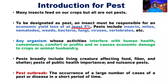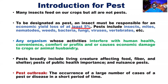In a broad definition, some scientists define pests as living creatures affecting food, fiber, shelter, and public health importance. Pests of public health importance are disease-causing or disease-transmitting pests, such as mosquitoes transmitting dengue, chikungunya, and malaria viruses. Nuisance pests, such as bed bugs and house flies, come in large numbers during the rainy season.